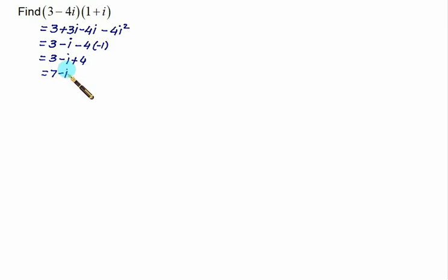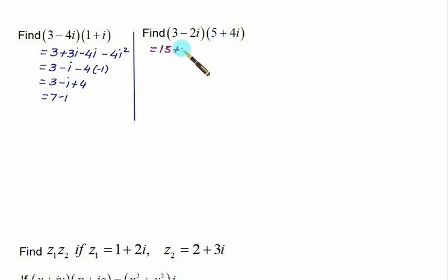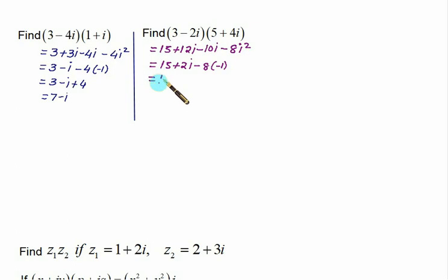Now find (3 - 2i)(5 + 4i). Multiply 3 by the second bracket: 15 + 12i, then -2i gives -10i - 8i². Since i² = -1, we get 15 + 12i - 10i + 8, which simplifies to 15 + 2i + 8.